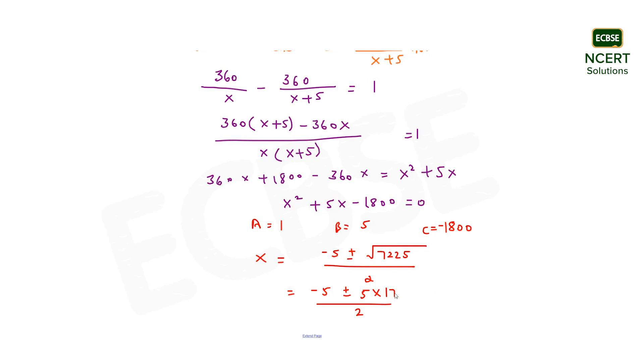This means x can be equal to minus 5 plus 85 divided by 2 and another one will be minus 5 minus 85 divided by 2. On solving, this will be equal to 80 by 2 and another root will be minus 90 by 2, or I can also write it as 40 and minus 45.